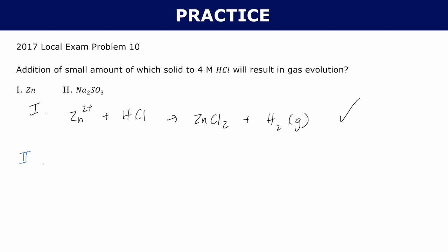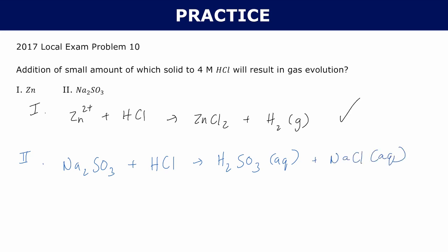Let's check number two: Na₂SO₃, sodium sulfite, reacting with hydrochloric acid. The hydrogen pairs up with the sulfite ion to form H₂SO₃ (aqueous), and sodium pairs up with chloride to form NaCl (aqueous). H₂SO₃ is one of our intermediates — we know it immediately breaks down into SO₂, sulfur dioxide gas, and water. So sodium sulfite causes a gas evolution reaction with 4 molar hydrochloric acid. The answer is both 1 and 2.